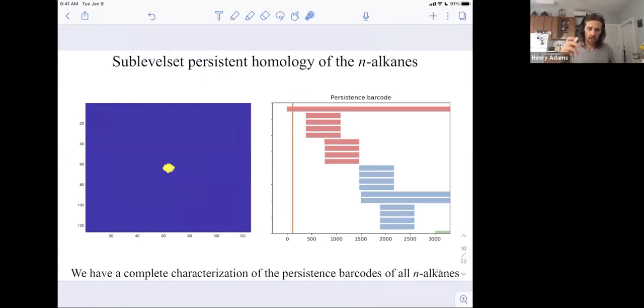So on the left I'm showing the sublevel sets of the torus. Again it's a torus because right and left sides are identified, top and bottom are identified. And when I cut at this low energy barrier I only include that little bit of the torus.